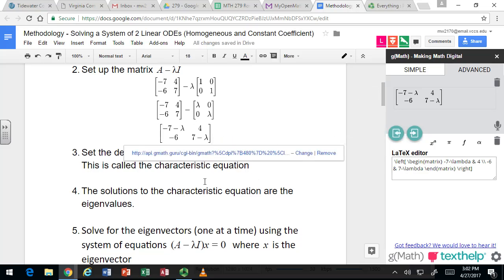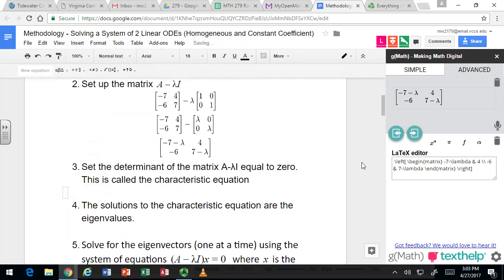We can write this as one matrix where it looks a lot like A except we're subtracting λ from the diagonals. Here's the matrix A minus λI. Now λ's are the eigenvalues and to find them we're going to set the determinant of this matrix equal to 0. This will give us what's called the characteristic equation.